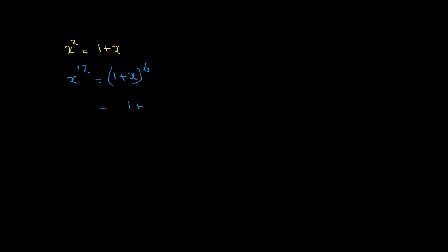This can be written as (1 plus x²) whole raised to power 3. Expanding using the binomial theorem, we get (1 plus x² plus 2x)³, which is (1 plus x² plus 2x) cubed.